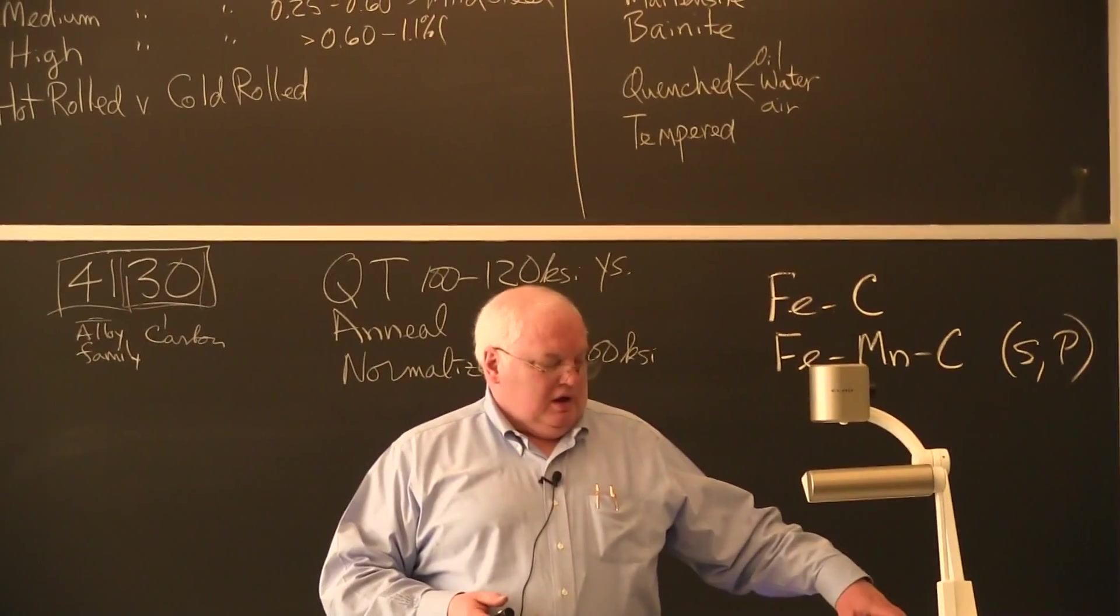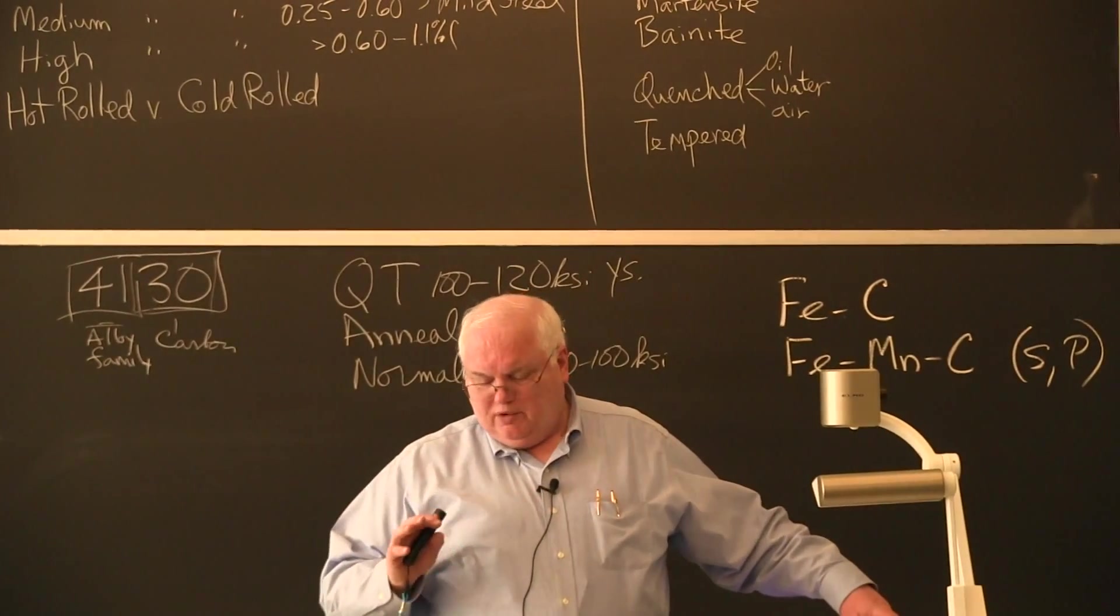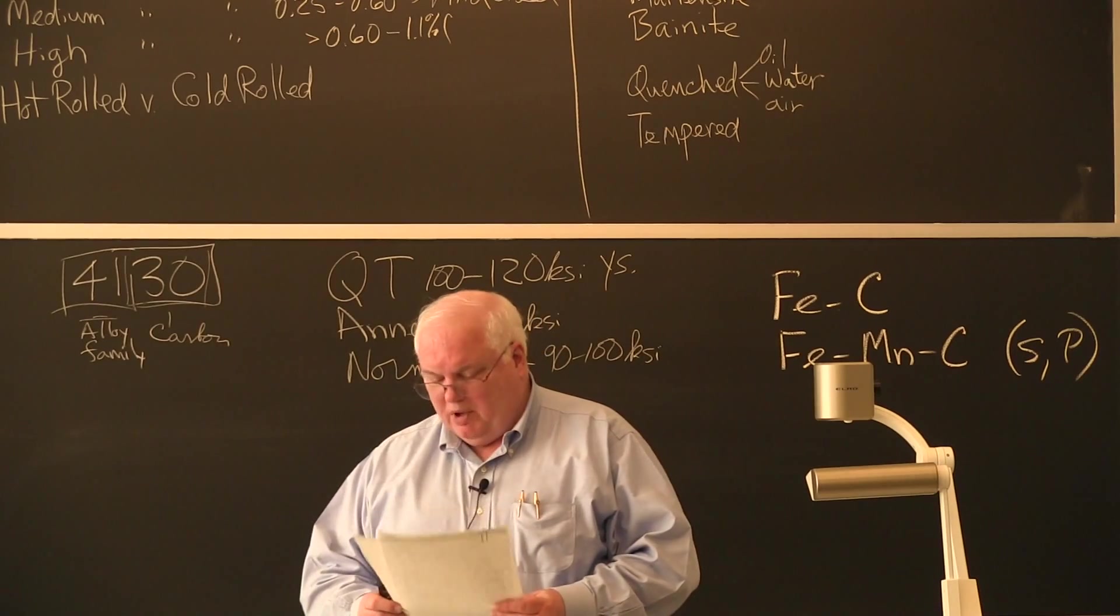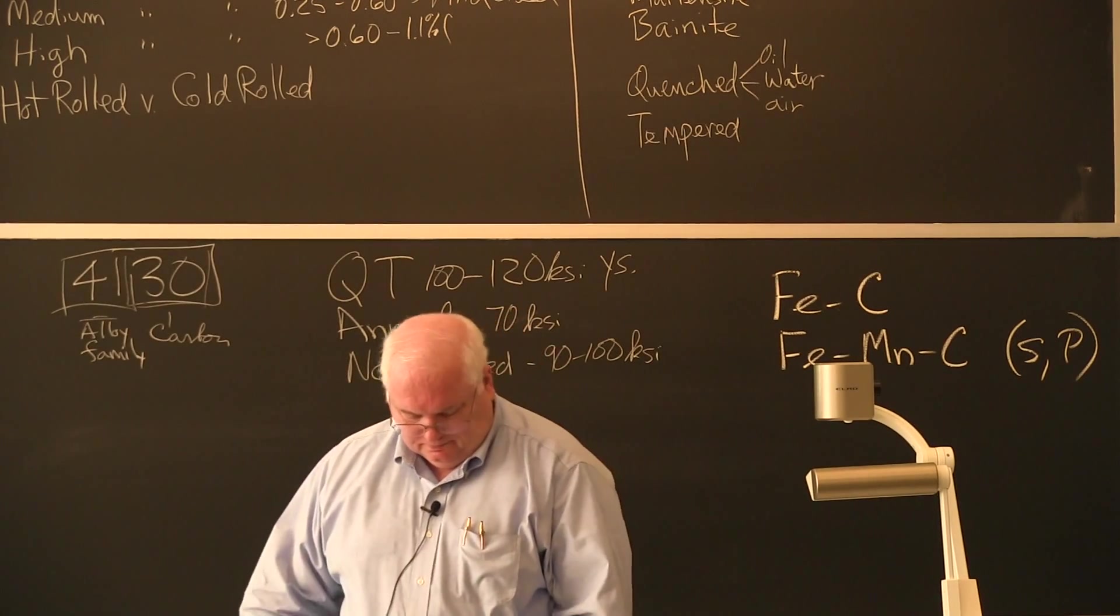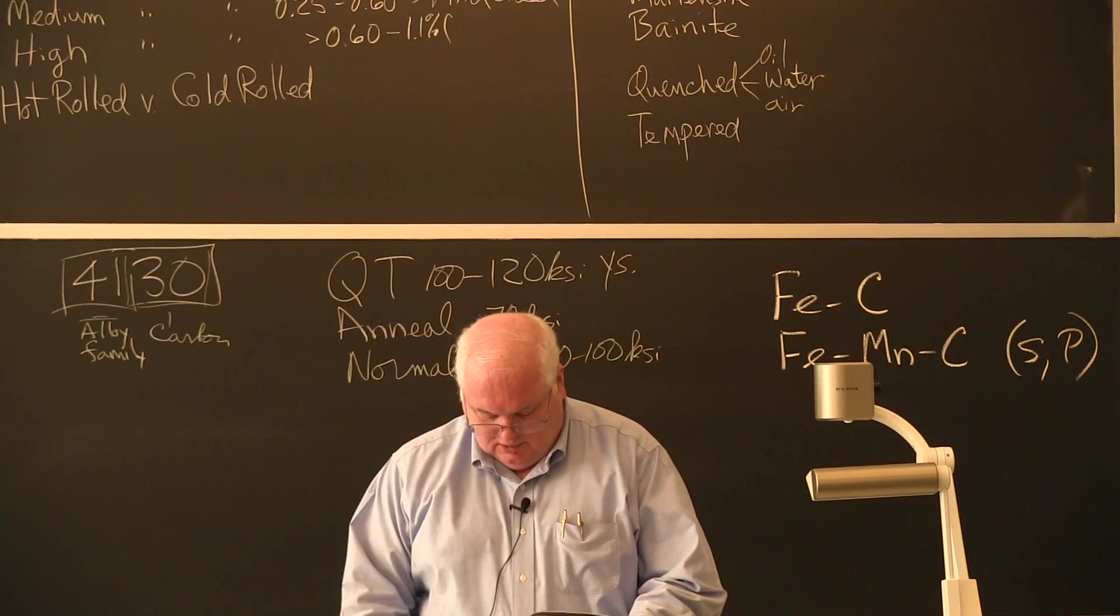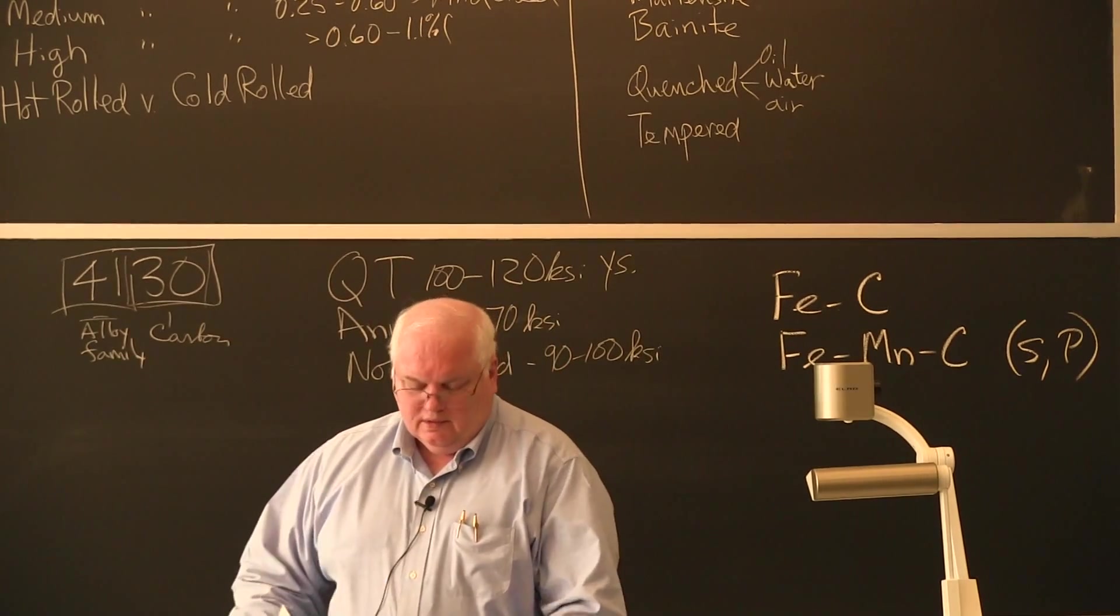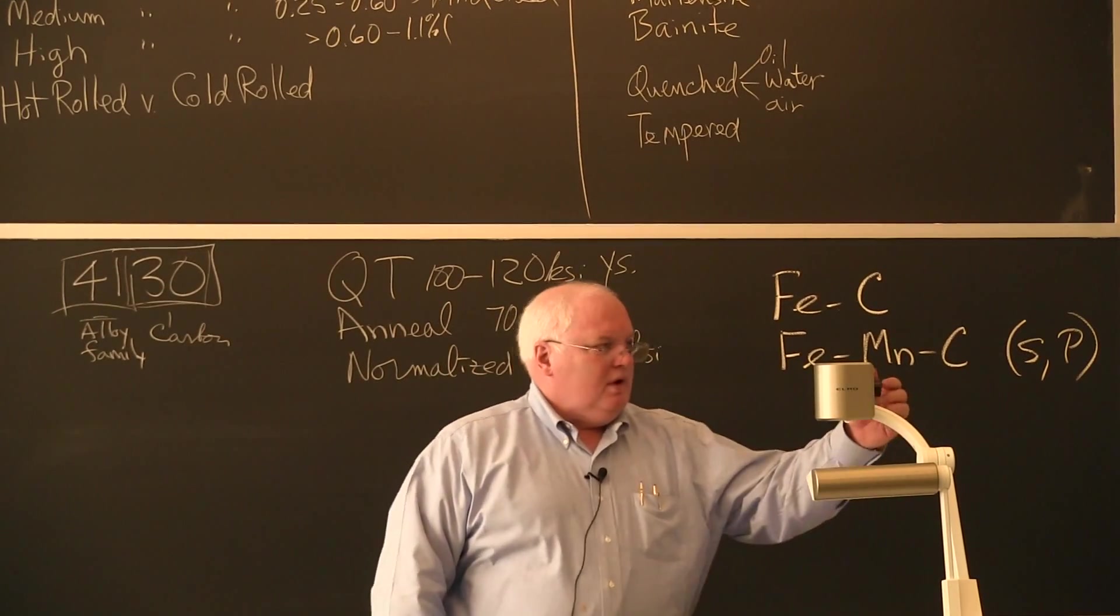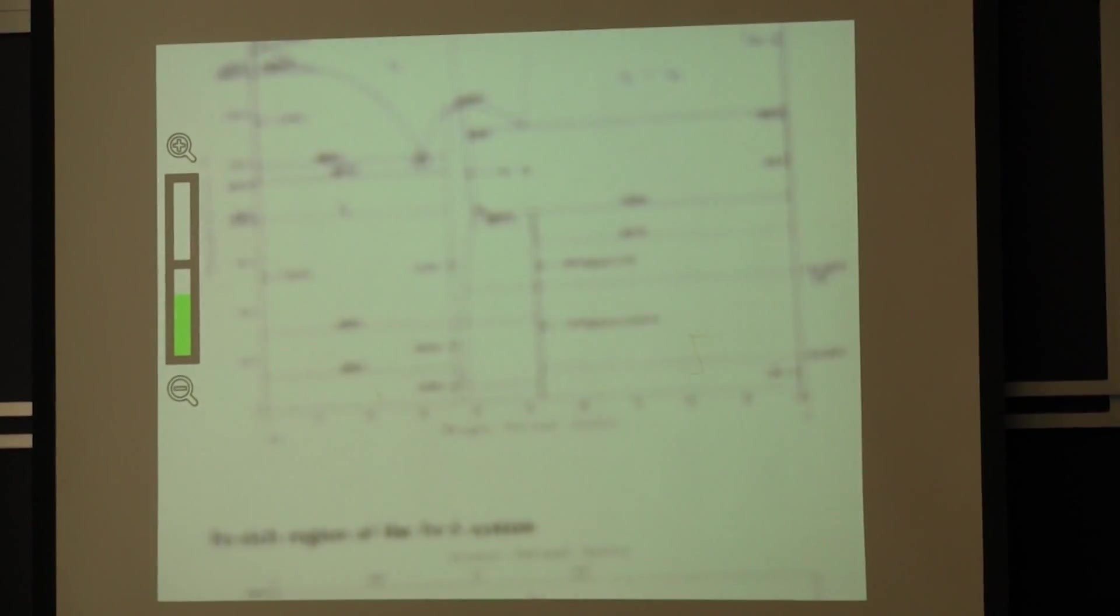Turns out if you look at the periodic table, the only two sulfides that melt above 1500 centigrade or 1538 centigrade are molybdenum and manganese. Molybdenum when you alloy with iron forms a lower temperature.